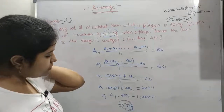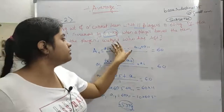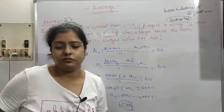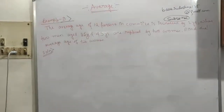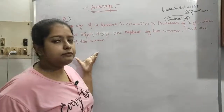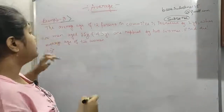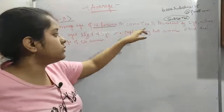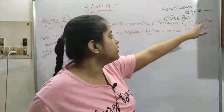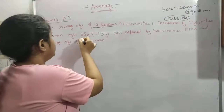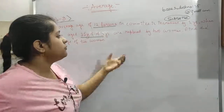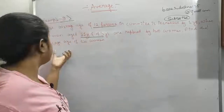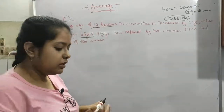I hope you have understood this — it is not a very tough question, please practice more. Now example 3: the average age of 12 persons in a committee is increased by 1 year when 2 men aged 35 and 43 are replaced by 2 women. Find the average age of the 2 women.